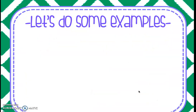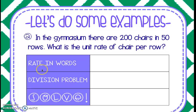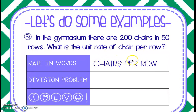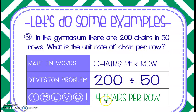Let's try another one. In the gymnasium, there are 200 chairs in 50 rows. What is the unit rate of chairs per row? Write the rate in words: chairs per row. There are 200 chairs — 'per' tells us to divide — by 50 rows. So our division problem says 200 divided by 50. Using our calculator, that tells us there are four chairs per one row.